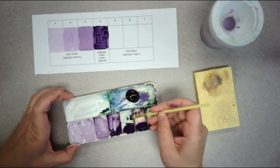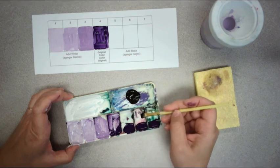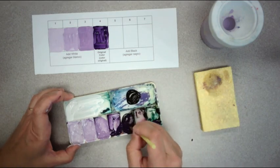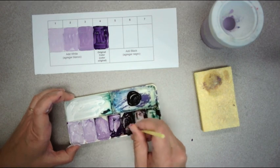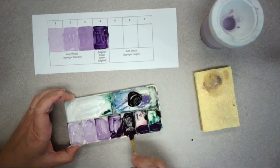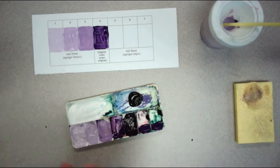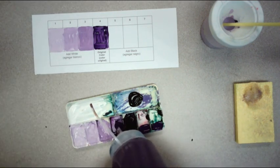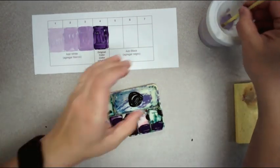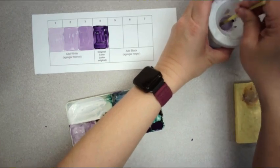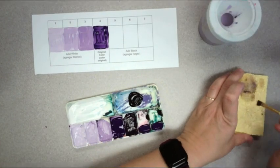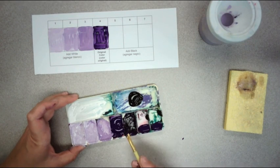Now with the black, the black is very powerful, so you only want to add a little bit of black at a time. And since this is only supposed to be a little bit darker, I'm going to add a lot of purple and just a tiny bit of black. In fact, I even need a little bit more purple because my black kind of overpowered it right away.